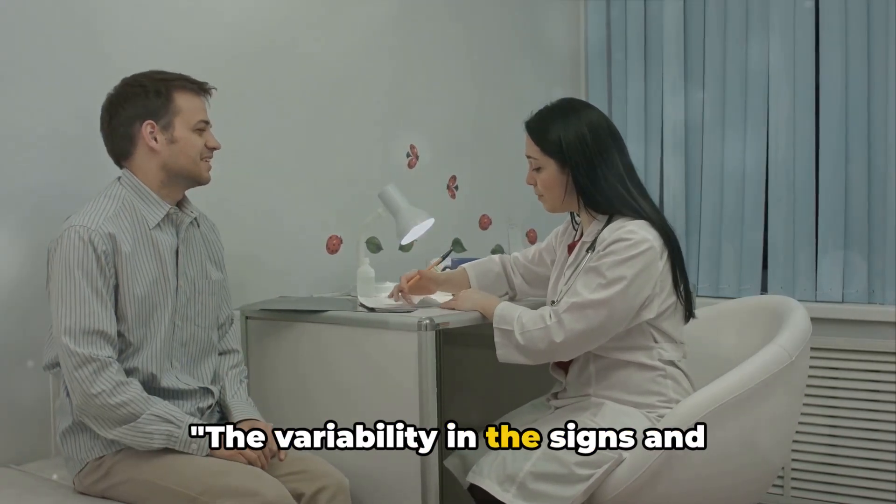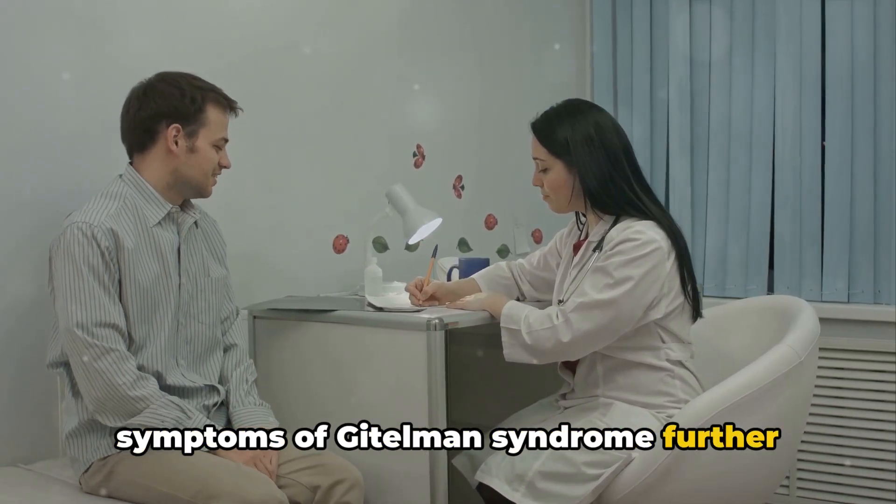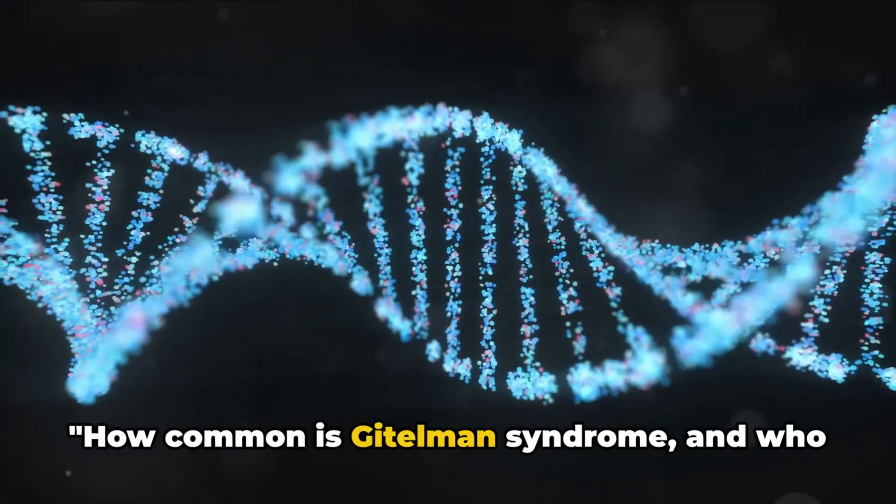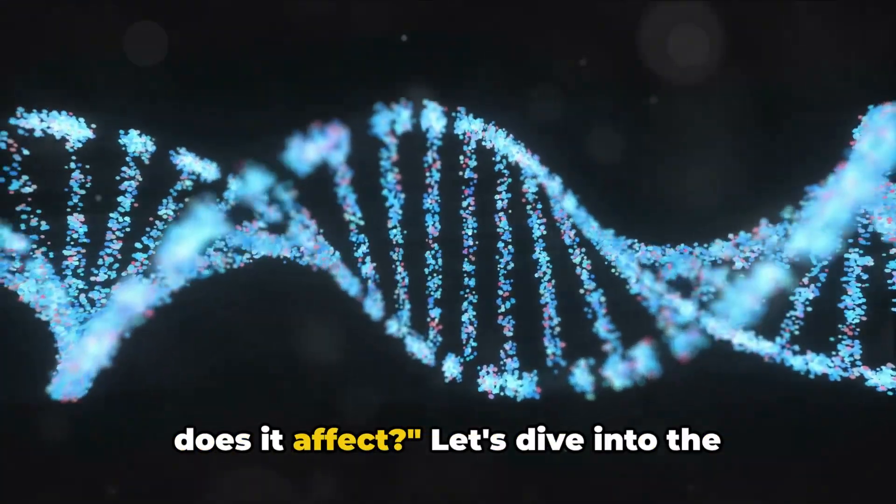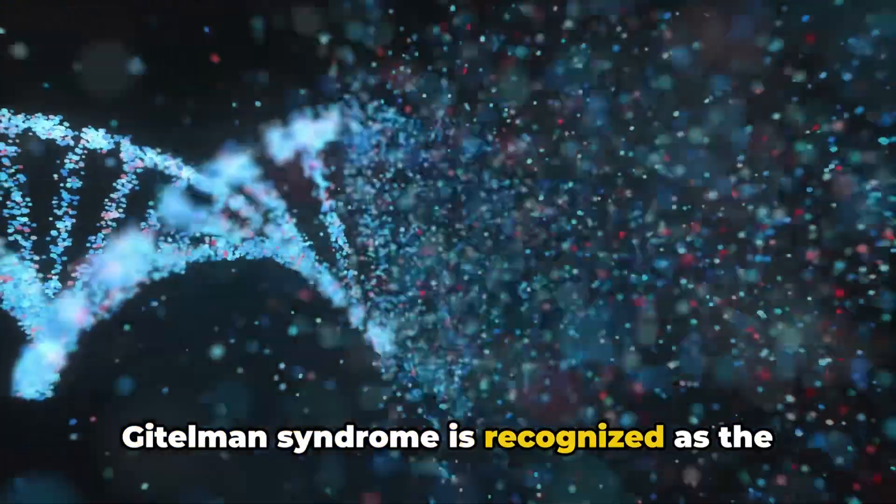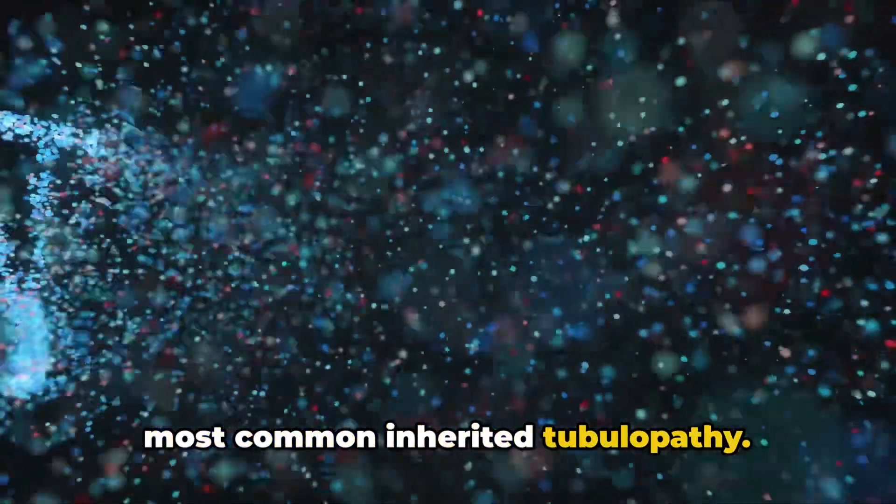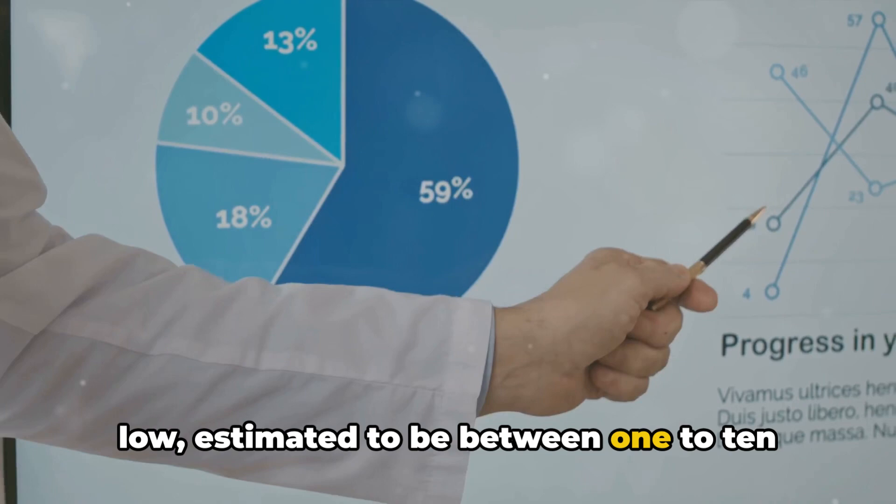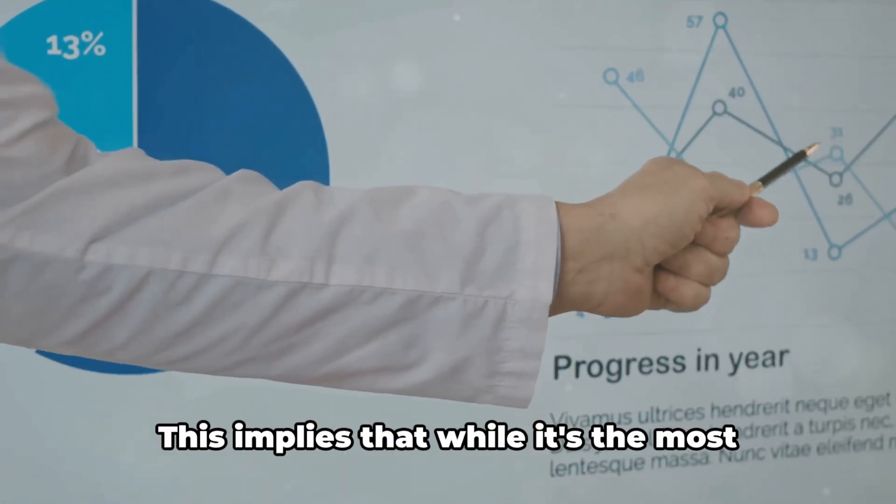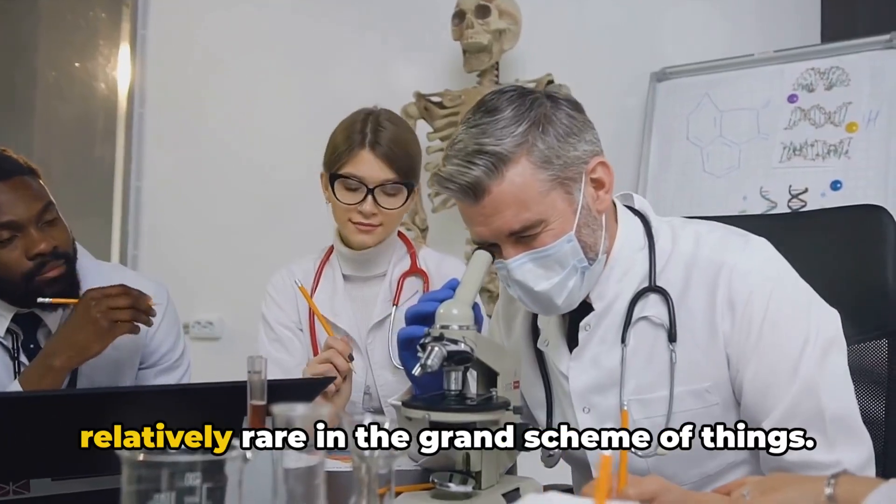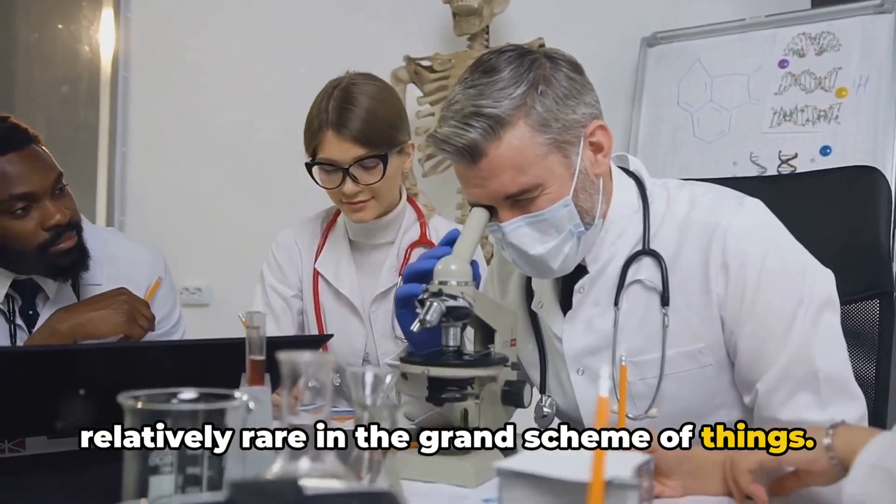The variability in the signs and symptoms of Gitelman syndrome further highlights the complexity of this genetic disorder. How common is Gitelman syndrome, and who does it affect? Let's dive into the epidemiology of this intriguing condition. Gitelman syndrome is recognized as the most common inherited tubulopathy. Its incidence rate is rather low, estimated to be between 1 to 10 per 40,000 individuals. This implies that while it's the most frequent of its kind, it's still relatively rare.